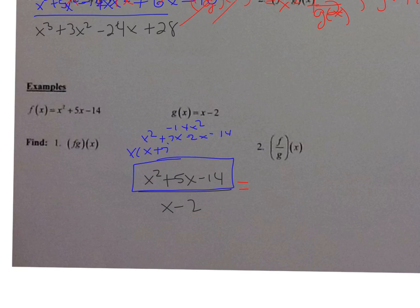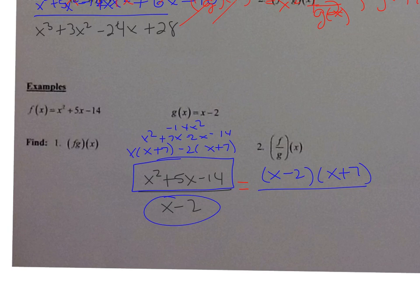So I get x times x plus 7, negative 2 times x plus 7. So my factors are x minus 2 and x plus 7 over x minus 2. Now x minus 2 can't be factored, so I like to put it in parentheses. So now notice they both have x minus 2 in the numerator and denominator, so they reduce to 1. So my answer is just x plus 7.